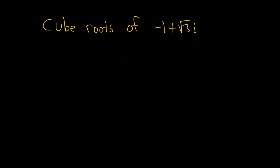In this problem we're going to find the cube roots of a complex number. In order to find the roots of a complex number, the very first step is to write it in what's called trigonometric form or polar form. Then there's a formula we can use that will allow us to find the roots. We're also going to leave our answer in trigonometric form, so we're not going to find an answer that doesn't involve trig functions.